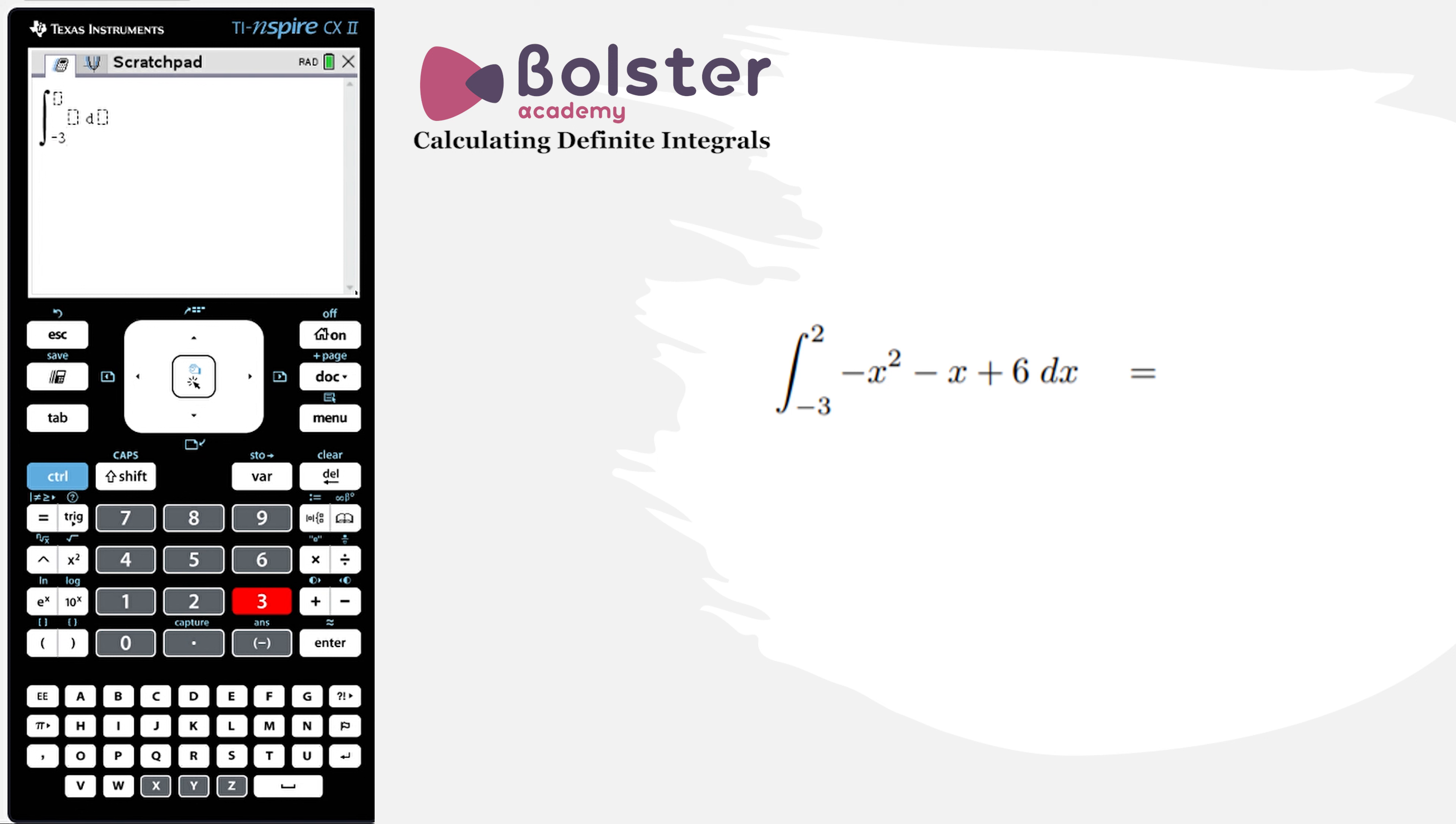So we will go minus 3, all the way until 2, and then we just put in our function. So it's minus x squared, minus x, and we have a plus 6. Again, don't forget, dx, with respect to x.